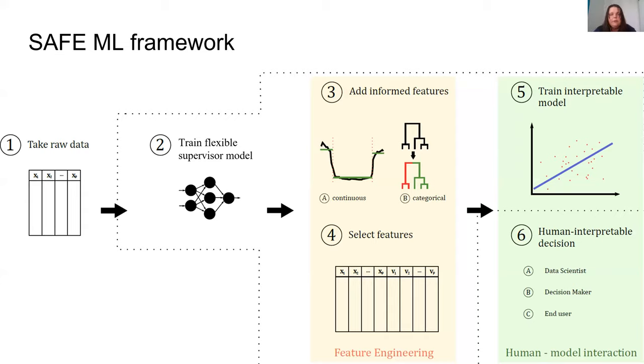The fourth step is optional. Here we perform feature selection on the new set of features that includes original variables from the raw data and variables transformed with the SAFE method. The fifth step is fitting a fully interpretable model on the selected features.